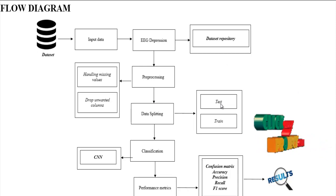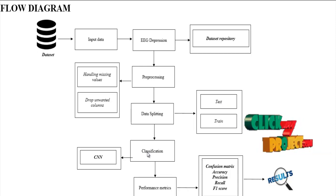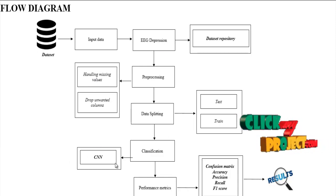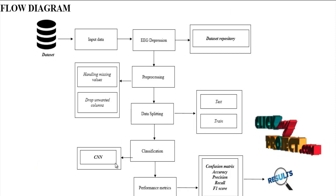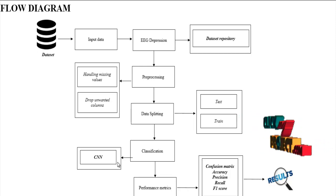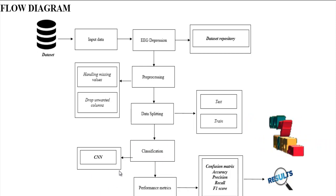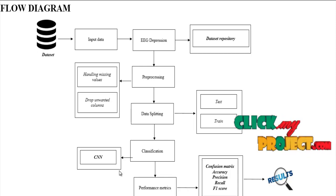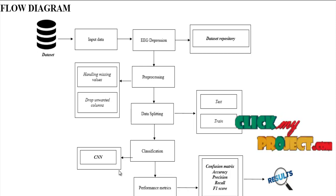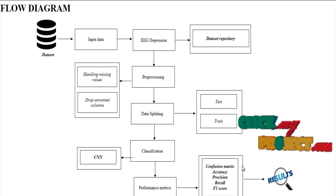The test set is used for the predictive model and the train set is used to evaluate our model. We implement the classification algorithm — specifically a deep learning convolutional neural network — to predict the patient's depression as either positive, negative, or neutral. Finally, the performance metrics include confusion matrix, accuracy, precision, recall, and F1 score, all estimated using the convolutional neural network. The result will be generated. This is the flow of our process.